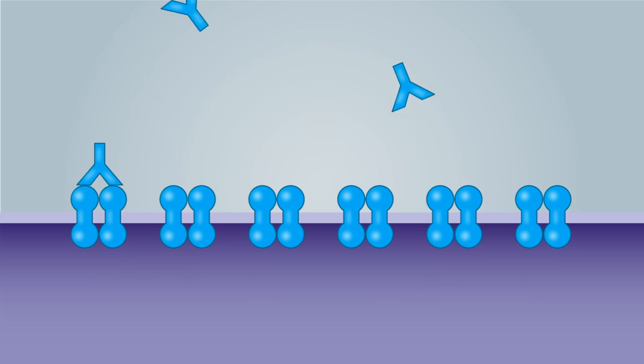Some target the receptor like Herceptin, and some block the ligand like Avastin.